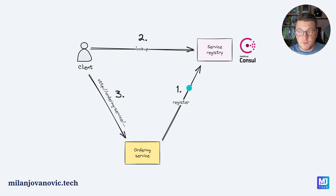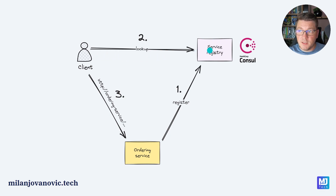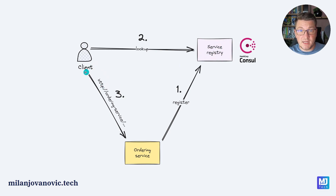The first step is that the downstream service — for example, the ordering service — registers with the service registry, which is our Consul instance. The next step: when our client wants to send a request to the downstream service, the client performs a lookup with the service registry, which gives it back a URL to call the downstream service. What's very interesting here is that we can assign a logical address — for example, just 'ordering-service' — and use this logical address for the lookup. This gives us back a physical address that we can then use to call the actual service.